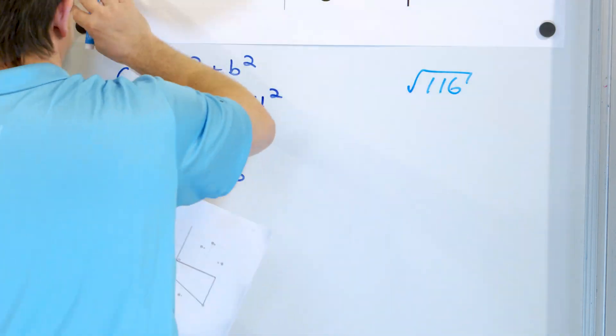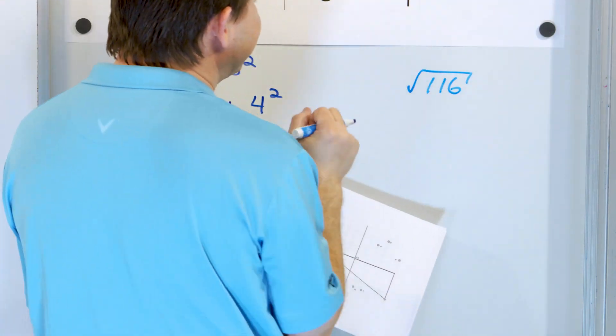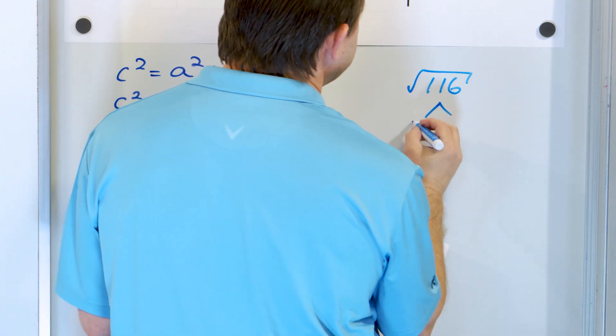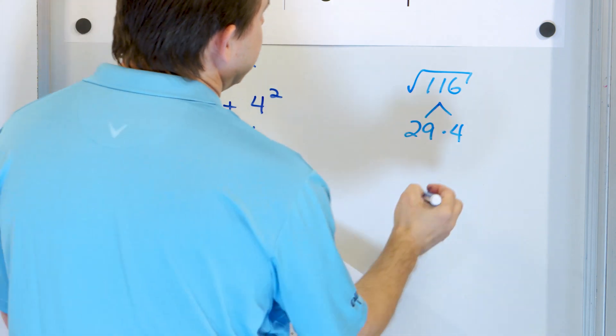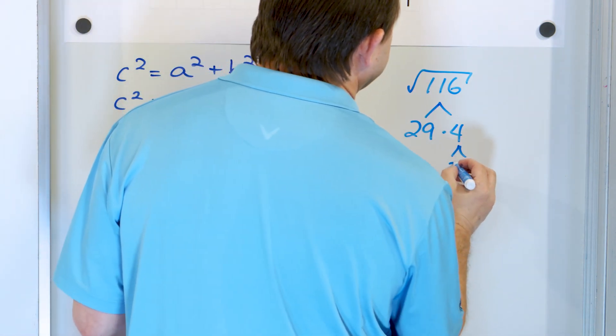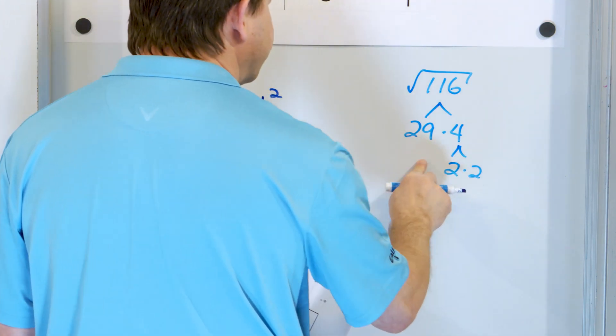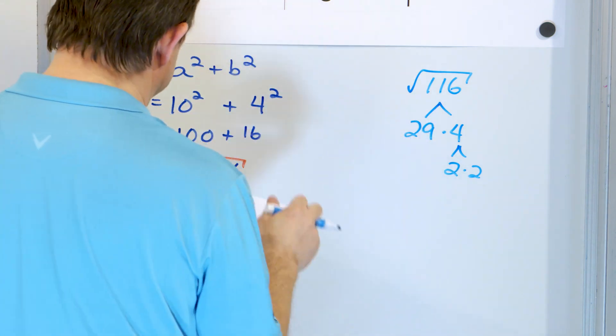but it turns out that it's also divisible by four. It turns out that 29 times four is exactly equal to 116. Now this is two times two, and this is not really able to be broken up into anything that's going to have pairs. So you just leave that there.